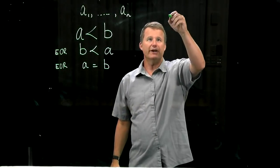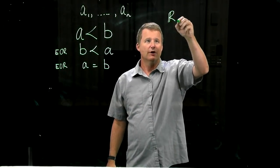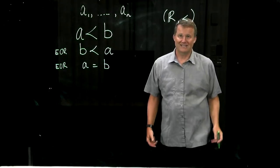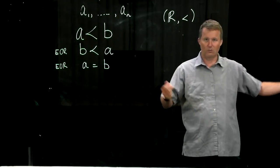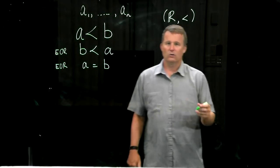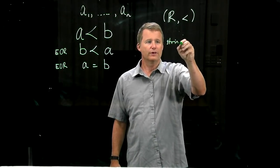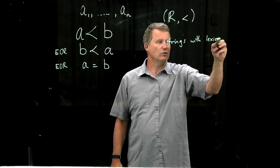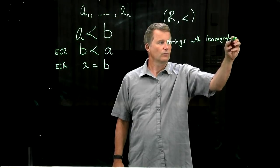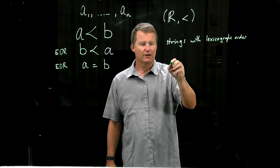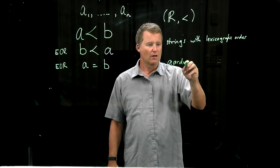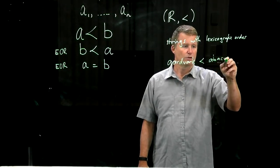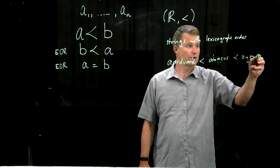If you pick any two elements, one of them is bigger than the other or they're equal, and we should be able to determine that. This order relation is important. We have plenty of examples already. Two very important ones are the set of real numbers with the usual less-than relation, and strings with the usual lexicographic or dictionary order. For example, aardvark precedes abacus, which precedes zymurgy.